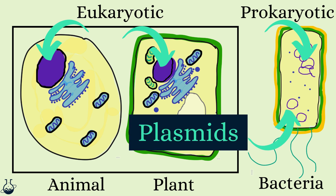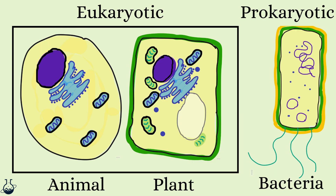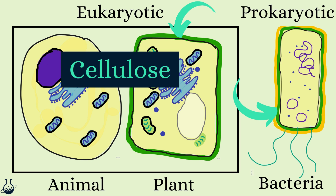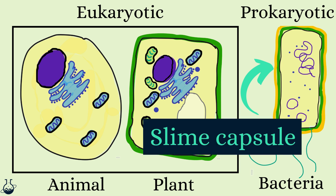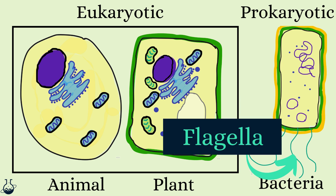Prokaryotes also may have — but not always — plasmids: loops of DNA that code for antibiotic resistance. You might notice that plant cells and bacteria both have a cell wall, but they are made of different substances. Where a plant cell wall is made of cellulose, bacterial walls are made of murine. Bacteria also have an additional layer of protection from physical and chemical threats in the form of a slime capsule, and they also have flagella to assist with movement.